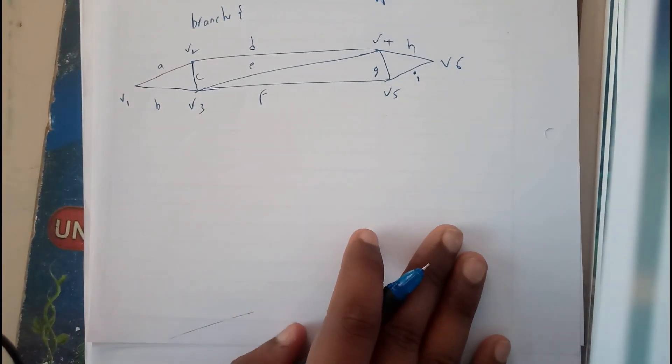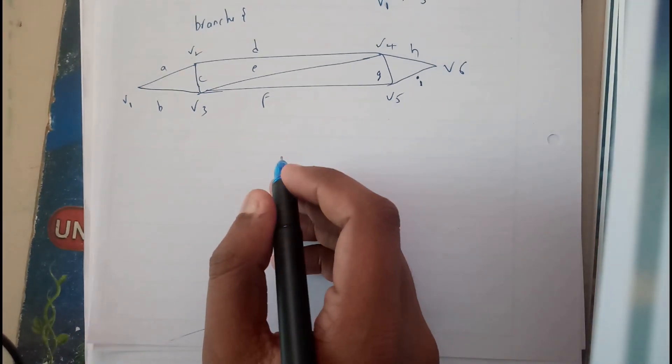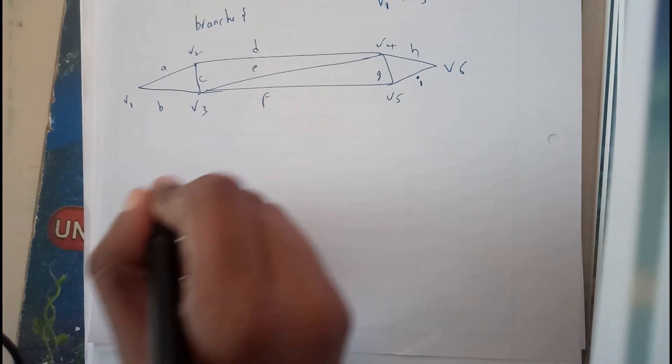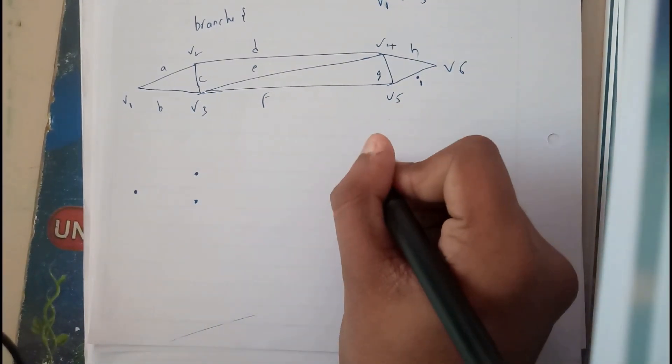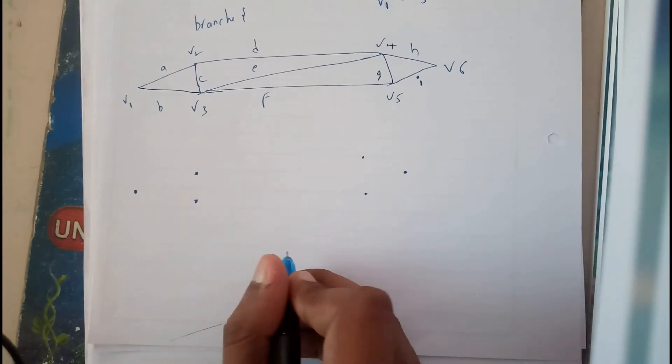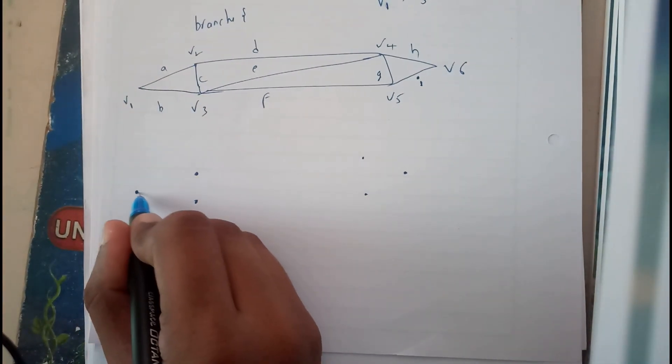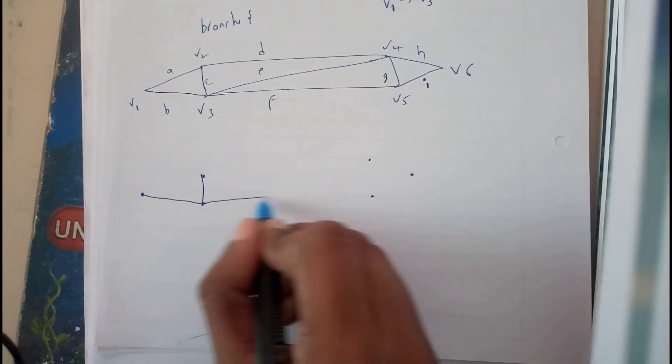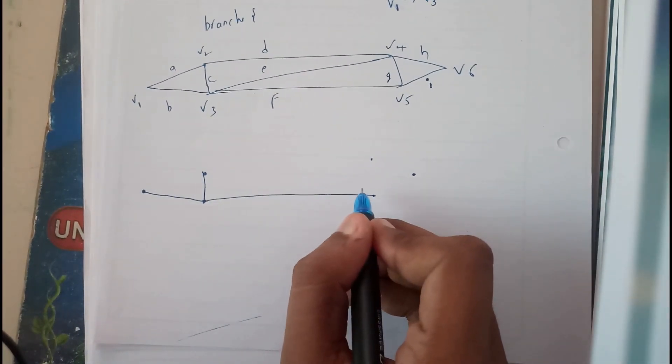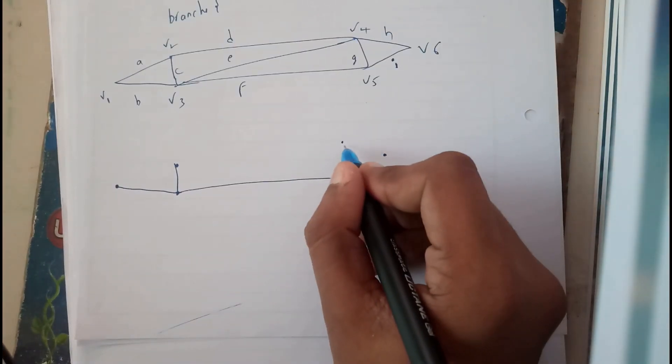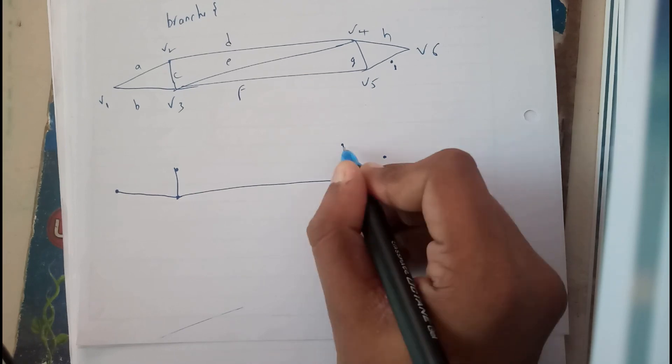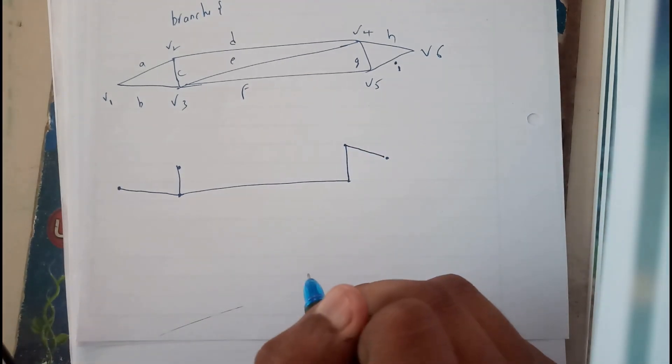So let us connect the minimum number of edges between them. I'll be initially plotting the dots. For any kind of diagram, follow this method - this will be the best method. One, two, three, like this.